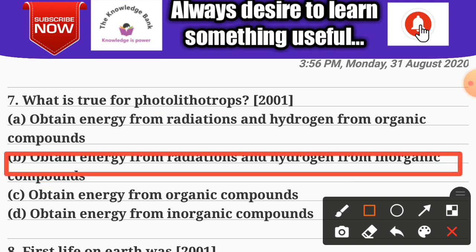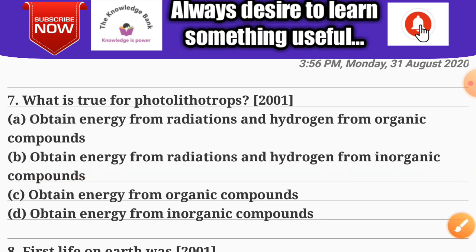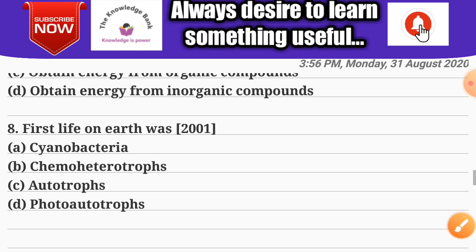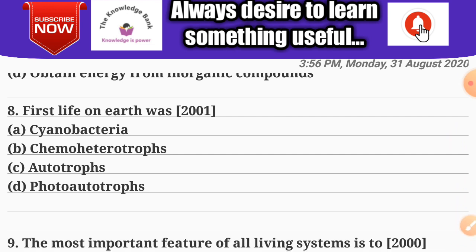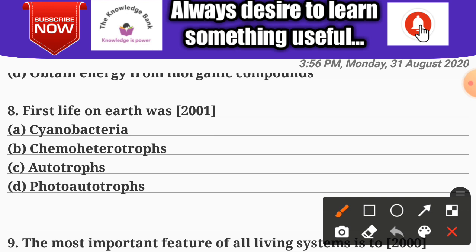Question number eight: the first life on earth was — Options: A) cyanobacteria; B) chemo heterotrophs; C) autotrophs; D) photo autotrophs. The correct answer is option B — chemo heterotrophs. The first life on earth was chemo heterotrophs.